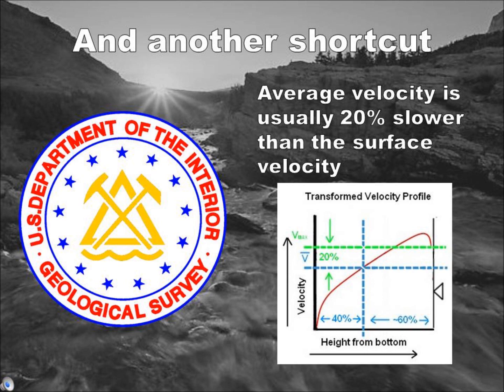Furthermore, USGS research has shown that average velocity is usually between 80 to 85% of the surface velocity of the stream. This makes it significantly easier to measure, as it means we no longer need to worry about suspending our measurement devices at depth.